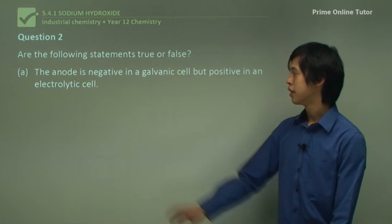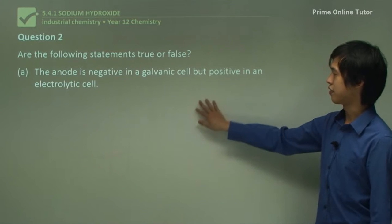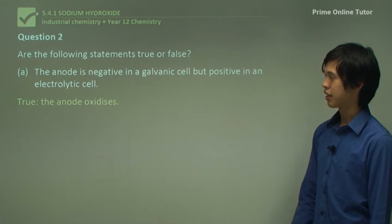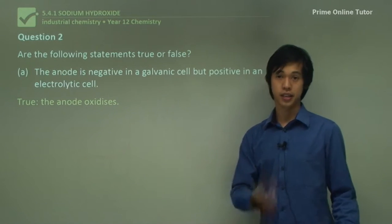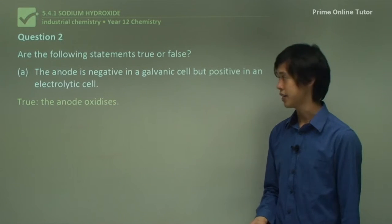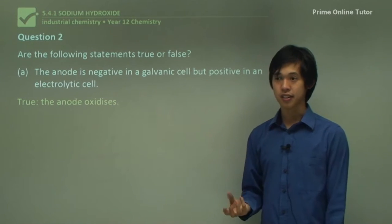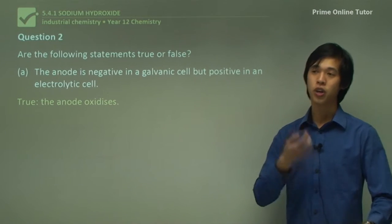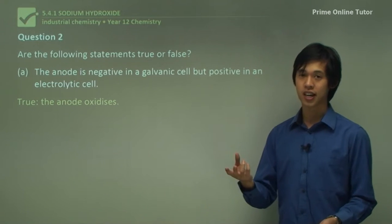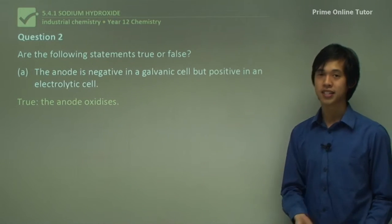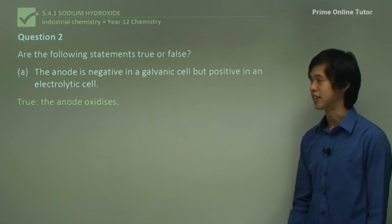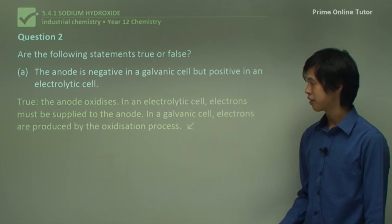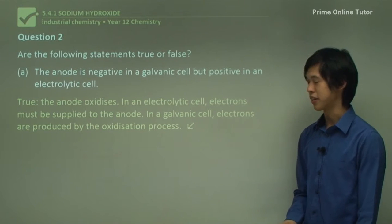Are the following statements true or false? The anode is negative in a galvanic cell but positive in an electrolytic cell — that's true. The anode oxidizes in a galvanic cell, so it produces electrons, making it the negative terminal. In an electrolytic cell it also oxidizes, but electrons are being drawn away by the battery, which is the positive side. In an electrolytic cell, electrons must be supplied to the anode; in a galvanic cell, electrons are produced by the oxidation process.